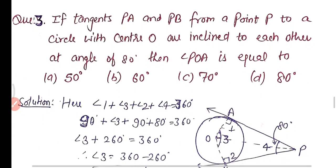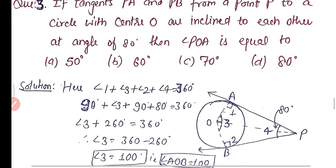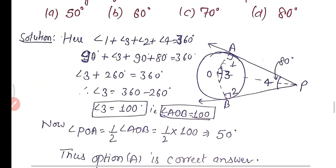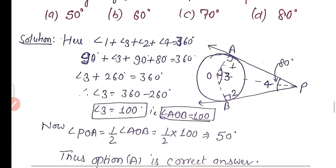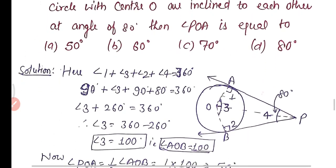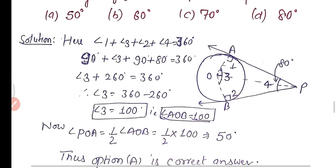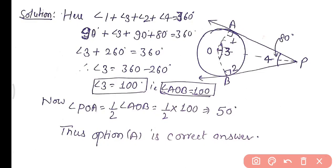Practice question 3: If tangents PA and PB from a point P to a circle with center O are inclined to each other at an angle of 80°, find angle POA. Options: 50°, 60°, 70°, 80°. The angle between the two tangents, angle APB, is given as 80°.